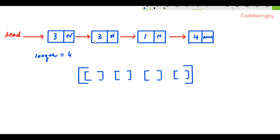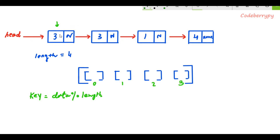The second step is to put the data from the nodes in the linked list into those empty buckets. To do that we use a hash key equation: key = data % length, which gives us the remainder of the data divided by the length of the linked list. For the first node, the data is 3, so 3 % 4 gives a remainder of 3, meaning key equals 3, and this data gets inserted into the third bucket of the hash table.